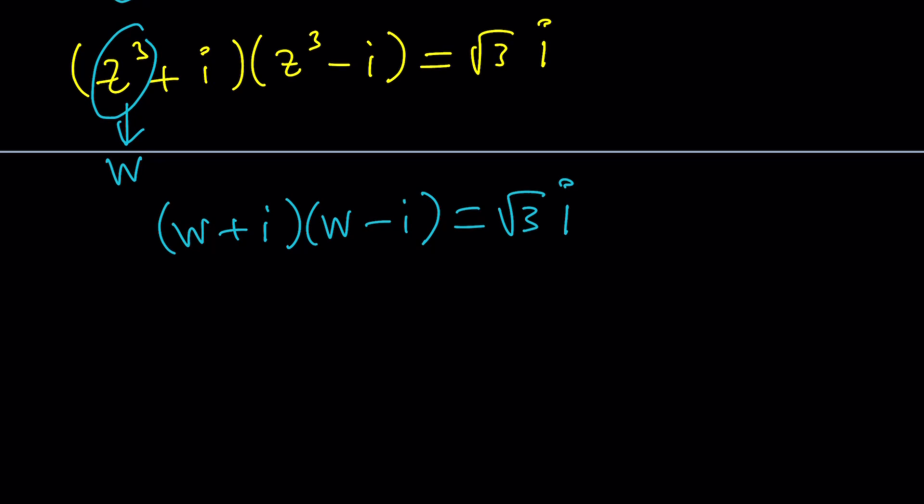but this becomes w squared minus i squared, which is plus 1, equals square root of 3i. Well, this looks like a quadratic, but there's no w. So we're just going to use square roots.